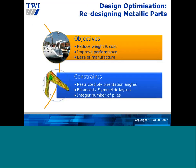One of the key areas where TWI sees a lot of interest from industry is redesigning metallic parts to use composite materials. Typically, the objective is to reduce weight and cost, potentially improve performance, and take advantage of improved ease of manufacture — shortening manufacturing and fabrication times and improving throughput. However, there are lots of constraints: restricted ply orientation angles, requirements for balanced or symmetric layups, and an integer number of plies. The images here show a lifting davit from a ship that was redesigned with composite materials, maintaining the same load-bearing capacity while significantly reducing the weight of the overall assembly.